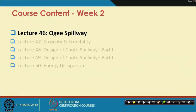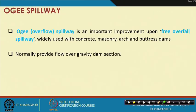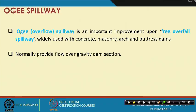We have a couple of contents here — Ogee Spillway — that is going to be covered at lecture 46, its design principle and a few problems. Ogee Spillway is an important improvement upon free overfall spillway, that is the free fall, and is widely used in concrete masonry, arch, and buttress dams.